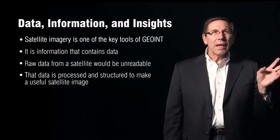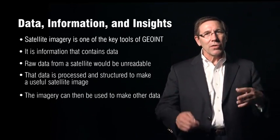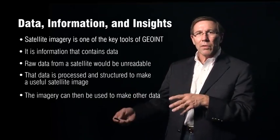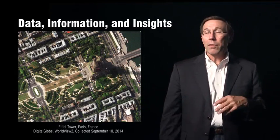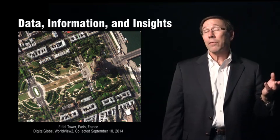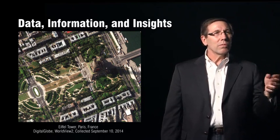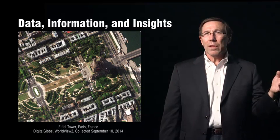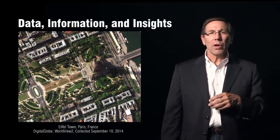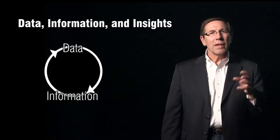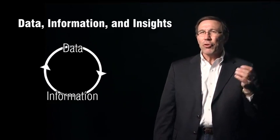Importantly, this image can be used to create other data. The satellite imagery is information that can be used to create other data. For example, we'll take the satellite image, which is information, and extract from it the height of a structure, maybe like the Eiffel Tower. Another example is we may use a satellite image to denote a particular building and find what the use of that building is. This cycle of data to information, which then becomes a basis for additional data and information, is really nothing new.